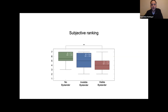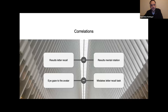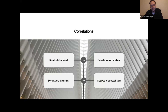After completing the VR tasks, participants rated how well they were able to focus on the task using a Likert scale from 1 (not at all) to 7 (very well). Again, the no-bystander condition provided the best results, and the difference between no-bystander and visible bystander was significant. We also analyzed the letter recall and mental rotation results using Spearman correlation, which showed a positive correlation between both test results. In the visible bystander condition, eye movements of subjects were captured.